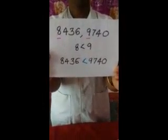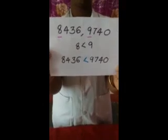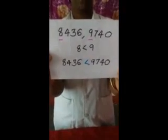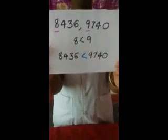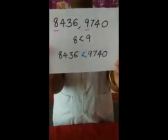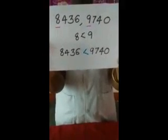See children, here are two numbers: eight thousand four hundred and thirty-six and nine thousand seven hundred and forty. In this example, the thousands place digits are different — eight and nine. Eight is always lesser than nine. So we can say that eight thousand four hundred and thirty-six is lesser than nine thousand seven hundred and forty.